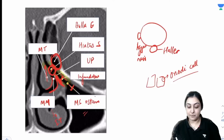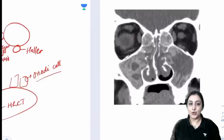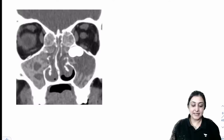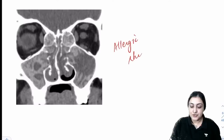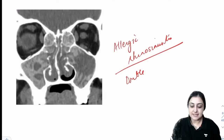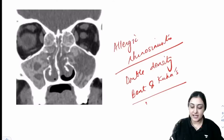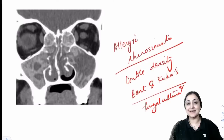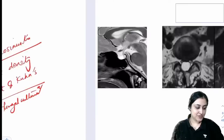This CT shows the double density sign with both sinuses and nose filled — this is allergic rhinosinusitis (ARS). We use the Bent and Kuhn criteria. Remember: fungal culture is a minor criteria; fungal staining is a major criteria. All major criteria EXCEPT fungal culture.